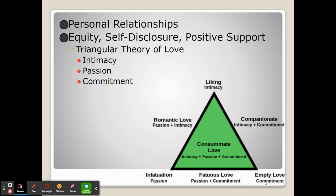Intimacy can occur in romantic relationships but also in companion relationships. As you combine some of these different ideas, you can get different types of love. Passion would be the physical act of love — the hugging, the kissing, the hand-holding — even in platonic relationships, the physical nature of showing that someone is important to one another.